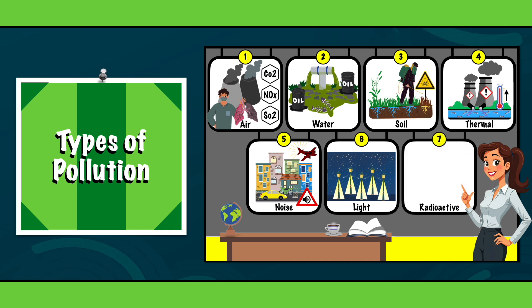7. Radioactive pollution. Radioactive pollution has severe consequences when it occurs, particularly from accidents at nuclear plants or the improper disposal of radioactive waste. Its environmental and health impacts are catastrophic, often leading to long-term contamination of land, water and air.